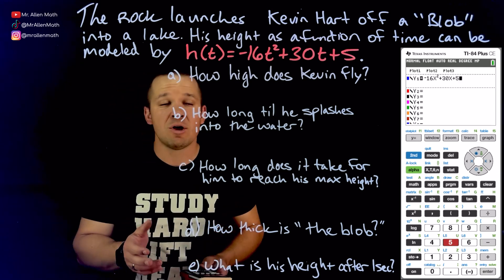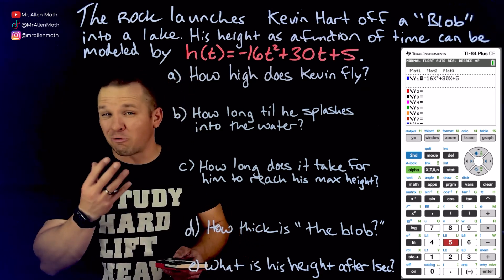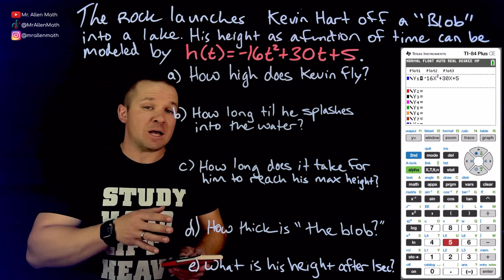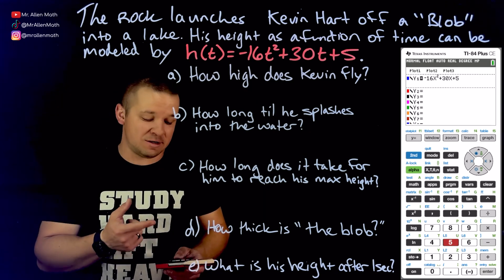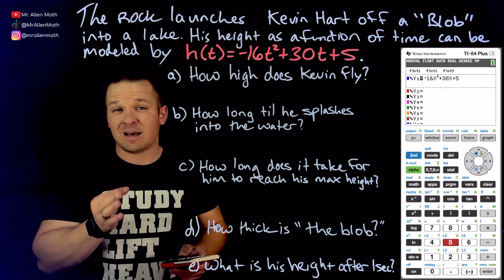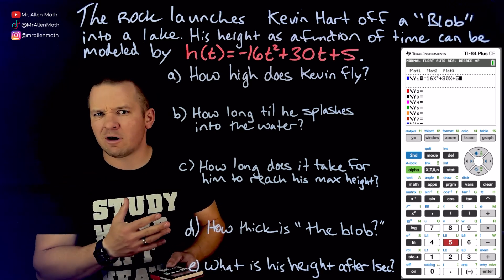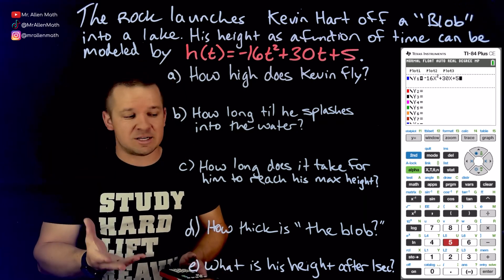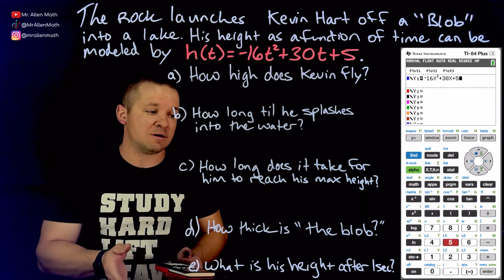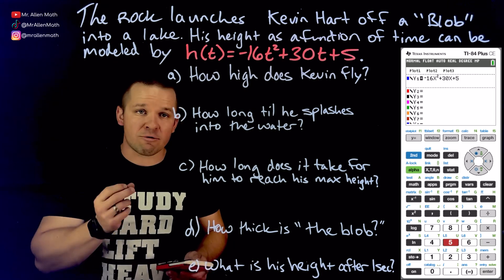So if this is like the first time you've really started using this calculator for a graph, it is a little intimidating at first. Your variable key is next to that green alpha key where it says x, t, theta, n. Those are the different default variables for different modes in the calculator. Ours is going to be x, and here it's t. T is time, x is just our variable in the calculator.